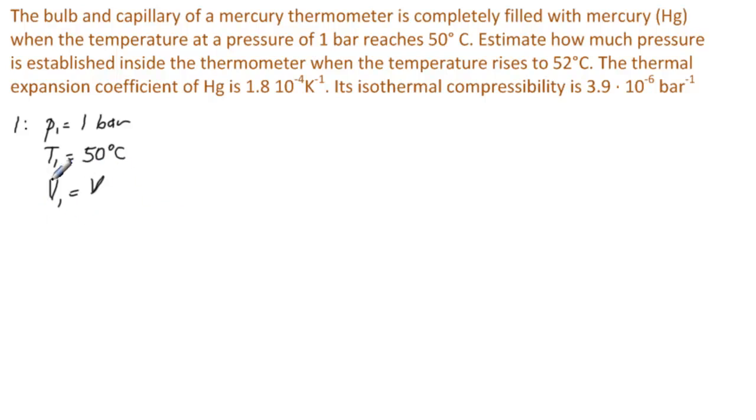Why do we write this down? The key part is that it's completely filled at 50, and so the same volume is present at 52 degrees. So that's why we write V1 equal to V, because on level 2 we have P2 equals, we're looking for that, we have T2 equals 52 degrees Celsius, and we have V2 equals the same V.